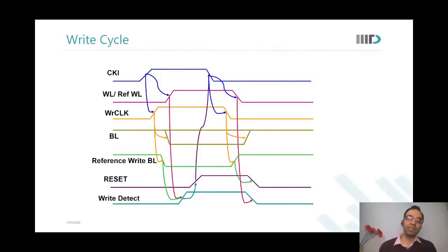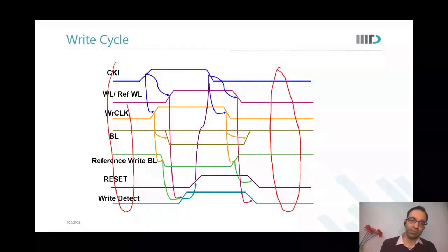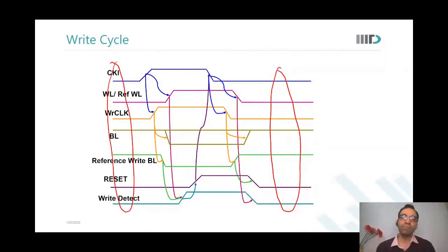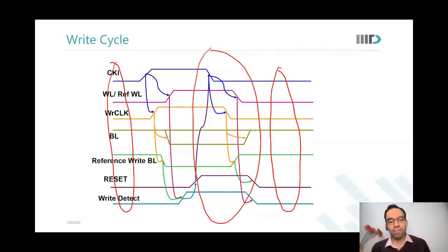Now your memory is already back to its initial state — the state and the initial state are the same. Your memory is ready to accept the next clock edge. Why is this sequencing important to be kept separate from the external clock?